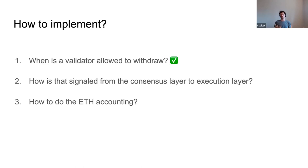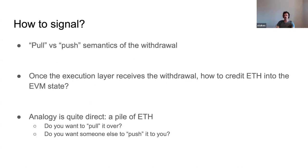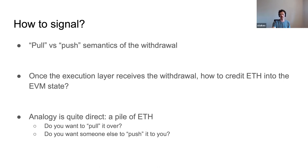Now covering questions two and three: how do you process withdrawals at the execution layer? The big question here is pull versus push. In a pull model, the validator comes to the chain and says 'my validator has this withdrawal, I'd like to pull the ETH into some execution address.' In a push model, the consensus layer pushes the ETH to the validator. The question also remains: how do you actually credit ETH in the EVM state once it's received?